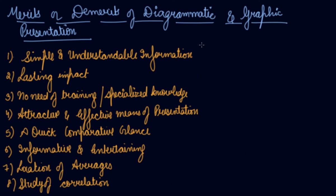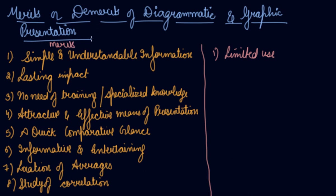Now the demerits. First is limited use. Only a limited set of data can be presented in the form of a diagram. Diagrams and graphs are generally used only when comparisons are involved or when time-series data are to be presented.